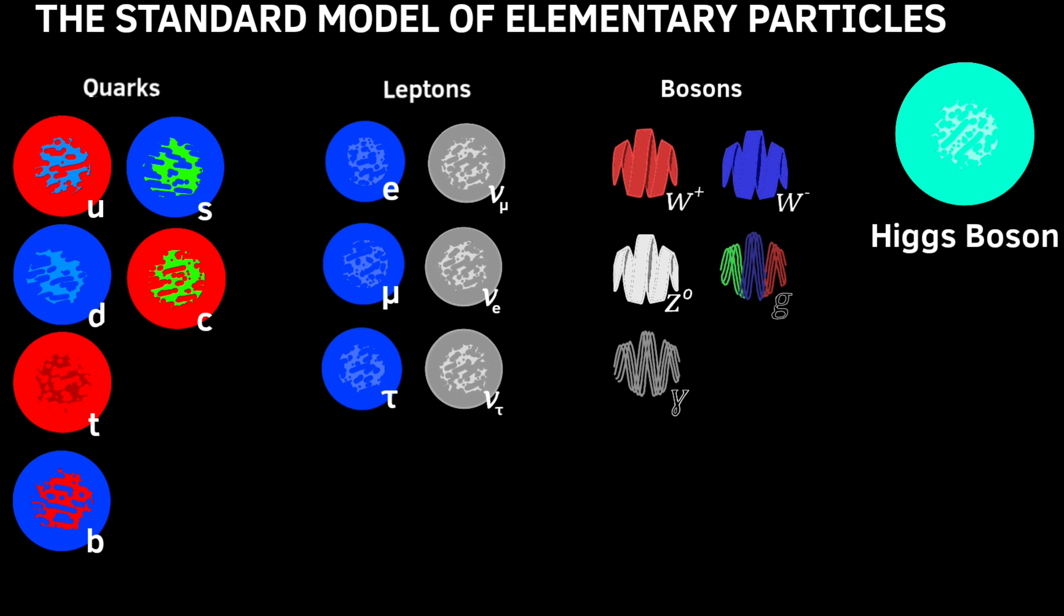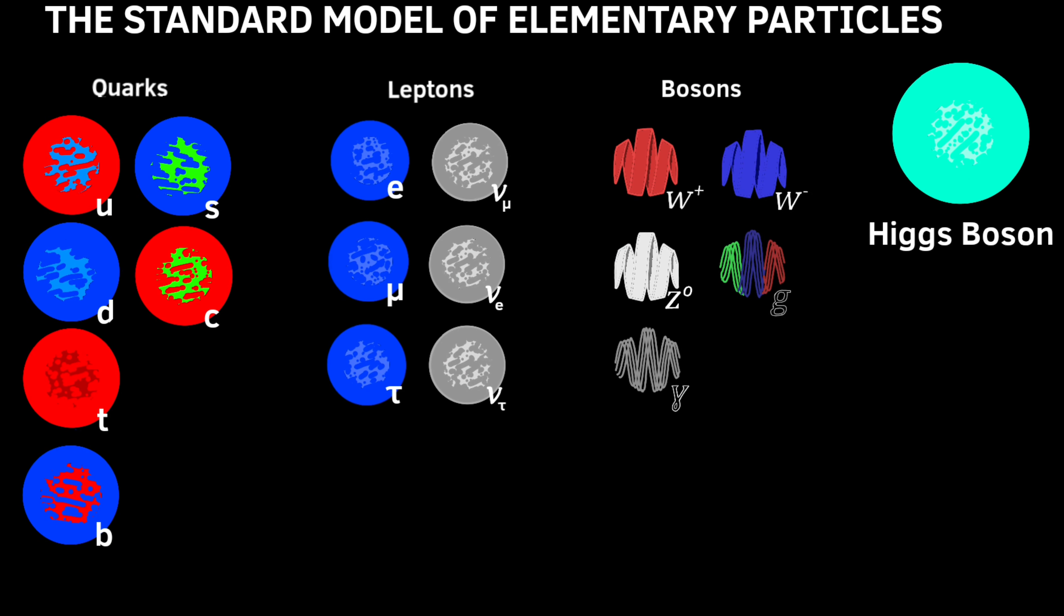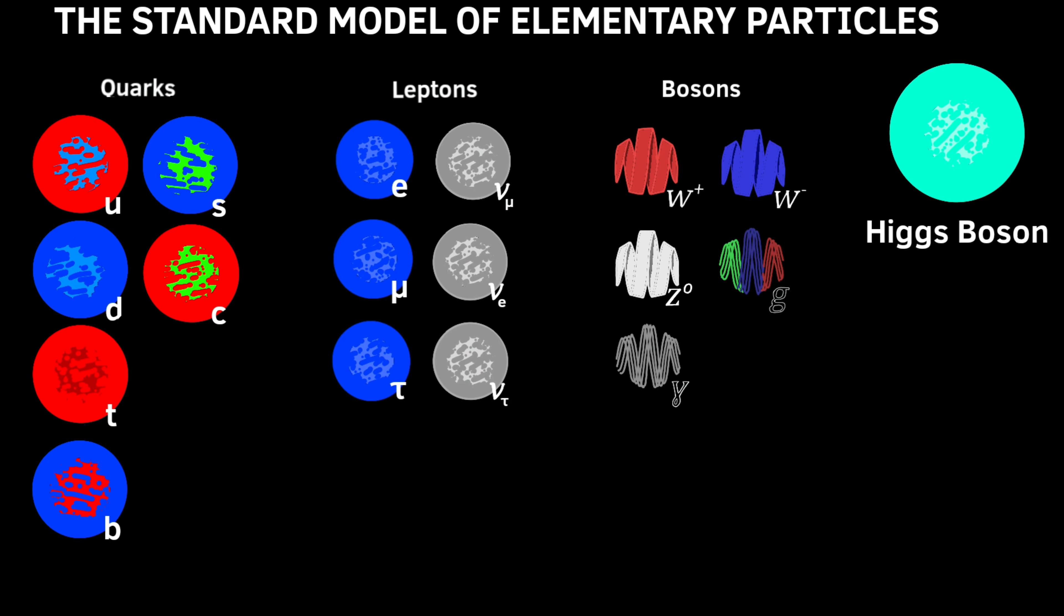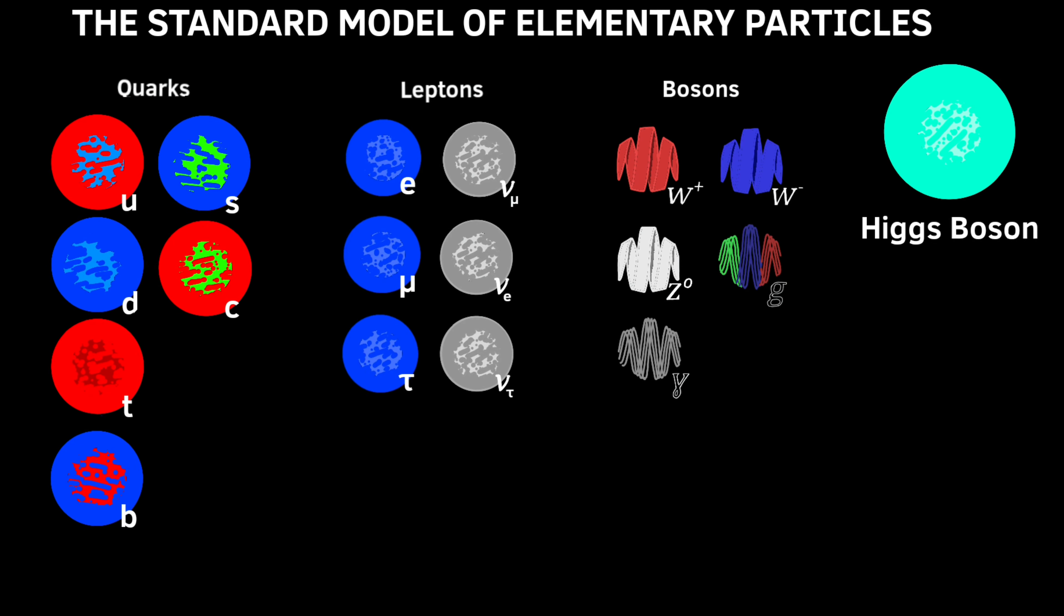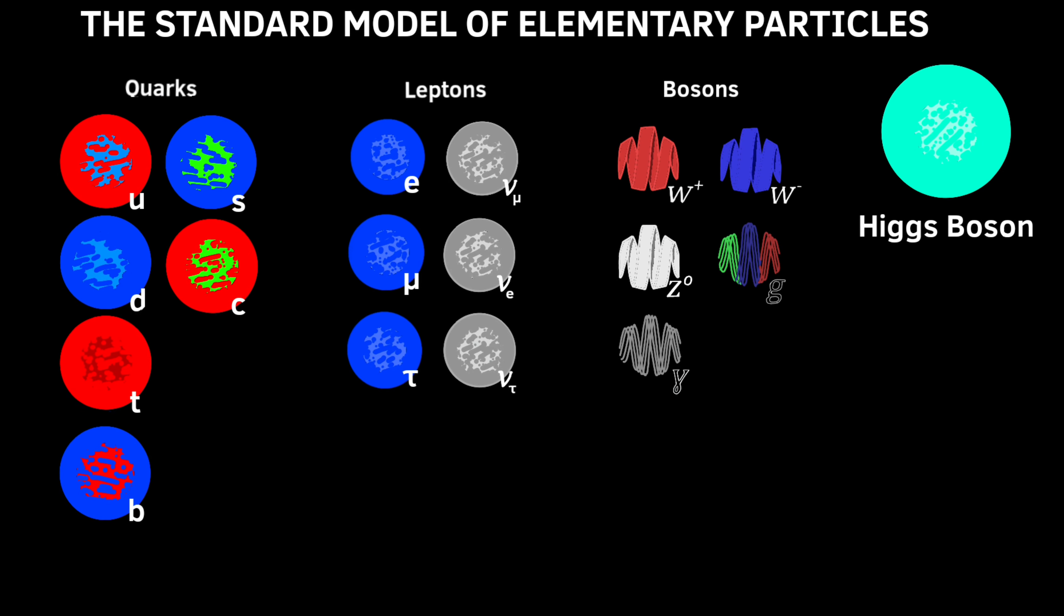In the standard model of particle physics, we have the elementary fermions, the quarks and the leptons that make up all matter, and we have elementary bosons that carry forces. These are the basic building blocks of our universe.